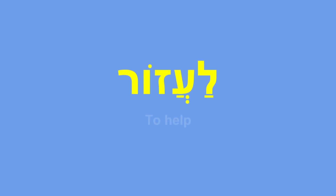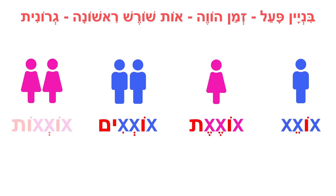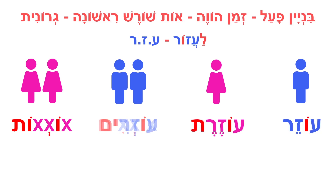Laazor — to help. Same conjugation pattern. The verb Laazor contains the root letters Ayin, Zayin, Resh. So it will be: Ozer, Ozeret, Ozerim, Ozrot. Compare that to Laavod: Oved, Ovedet, Ovdim, Ovdot — and here it's Ozer, Ozeret, Ozerim, Ozrot.